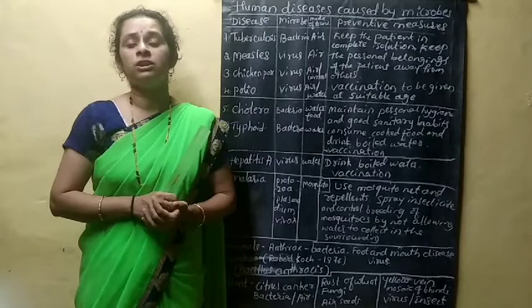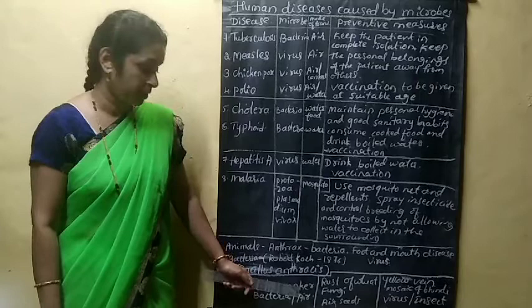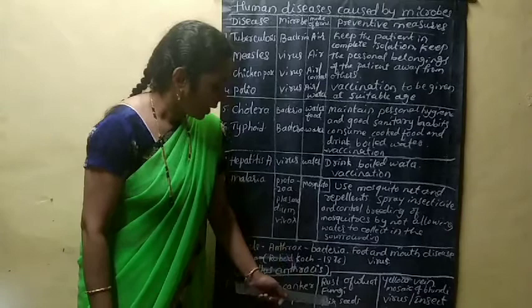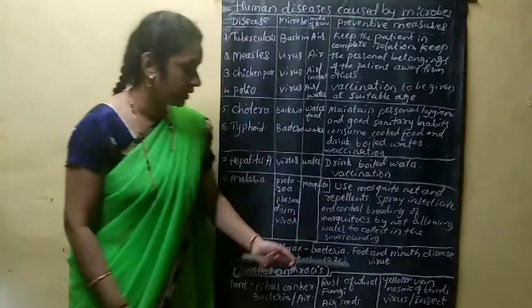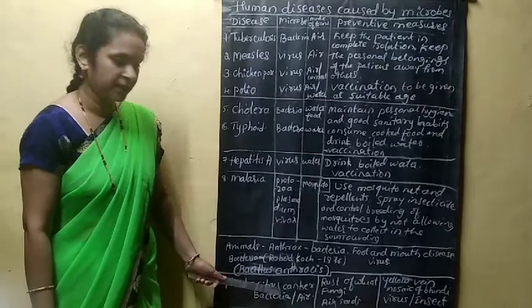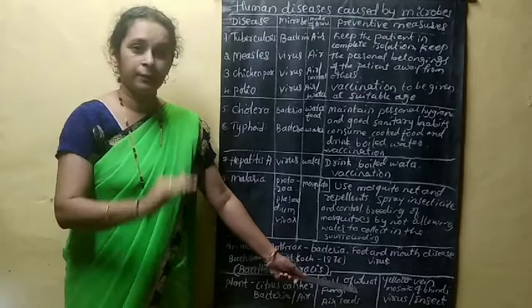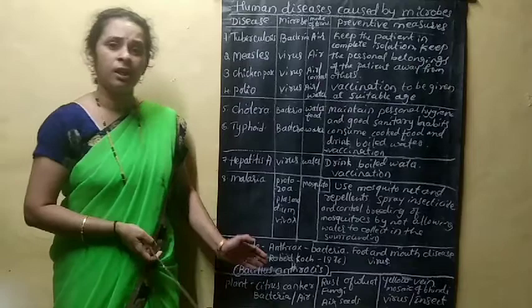Microorganisms also cause diseases in plants. Citrus canker is a bacterial disease in lemon plants, transmitted through air. Rust of wheat is a fungal disease caused by fungi, spread through air and seeds. Yellow vein mosaic is a viral disease transmitted through insects. These plant diseases have distinct characteristics that you will study in higher classes.